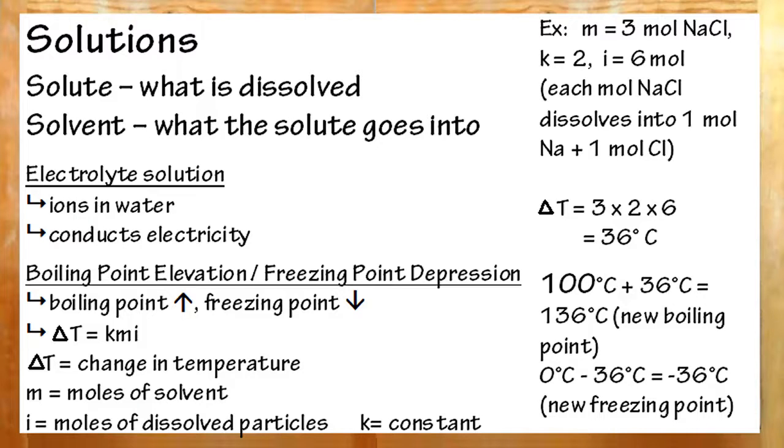When you do a dissolution, your boiling point of the solvent will increase, and your freezing point will decrease. To find exactly how much, use the equation delta T equals KMI. Add delta T to your boiling point and subtract it from your freezing point.